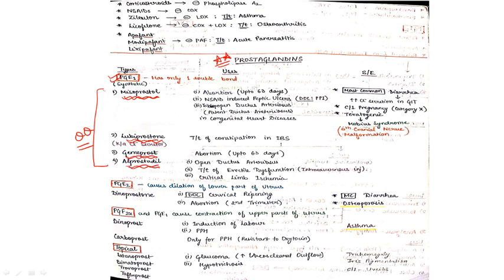Misoprostol - what are the uses? It can be used for abortion up to 63 days as an abortifacient drug, and can be used for NSAID-induced peptic ulcer. Although drug of choice will be PPI, misoprostol is also used for NSAID-induced peptic ulcer. It can be used to open ductus arteriosus in case of PDA, which is a congenital heart disease.